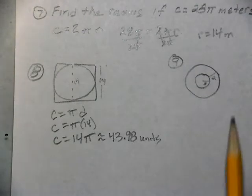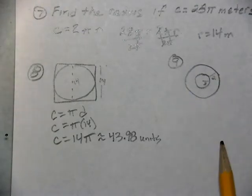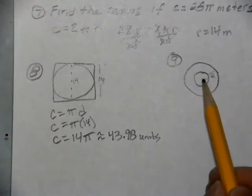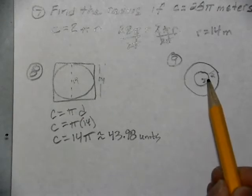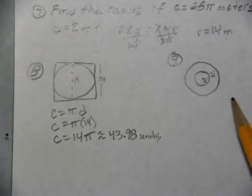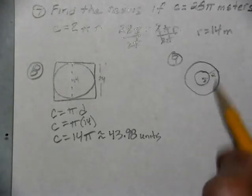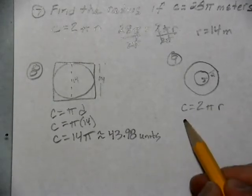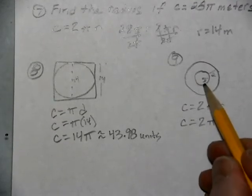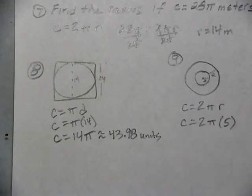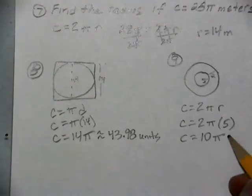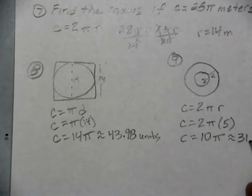We're going to find the circumference of the outside circle. To do that, we need the total diameter. From the inside it's 3, and then 2 more to get to the edge, so the total radius is 5. Using C = 2πr with r = 3 + 2 = 5, the circumference is 10π, approximately 31.42 units.